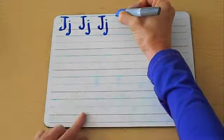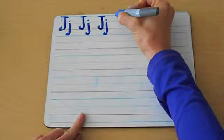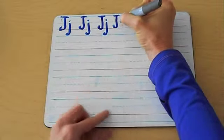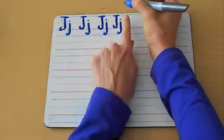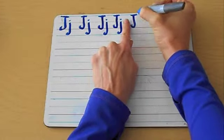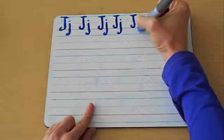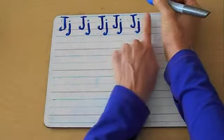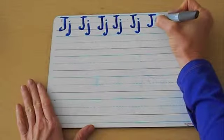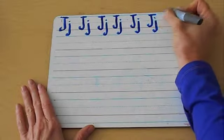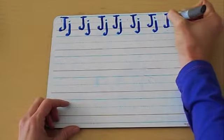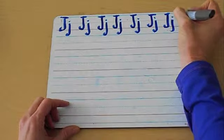One more time. Ready? Down and around and across. Lowercase, make the tail and up. One finger space. From the top, down and around and across. Lowercase under the broken line, make a tail and up. Uppercase from the top, down and around and across. Lowercase, make a tail and up. One finger space, down and around and across. Lowercase, down and around and a dot.